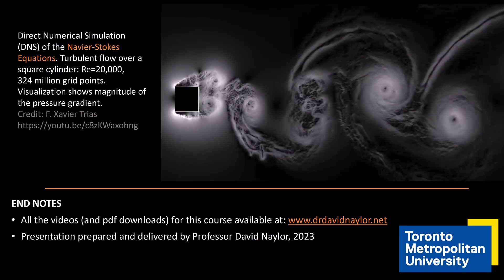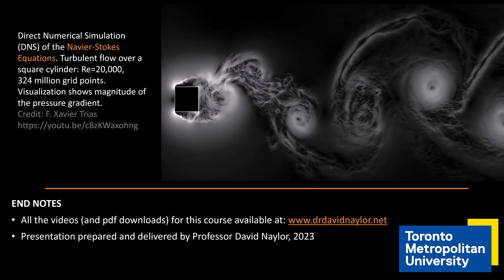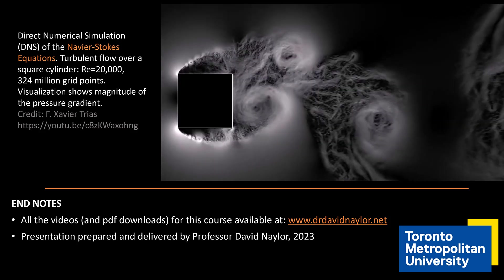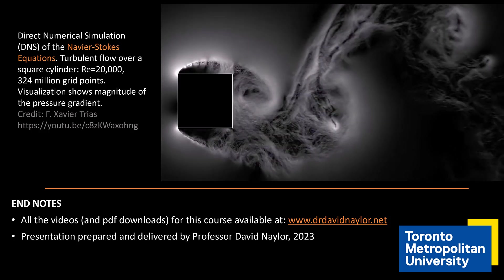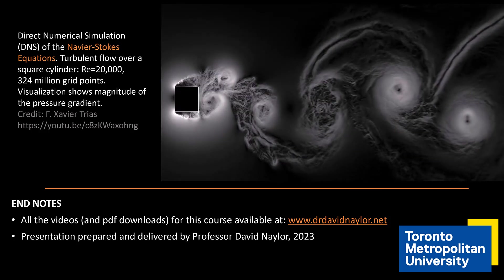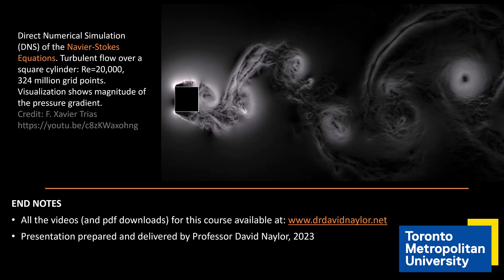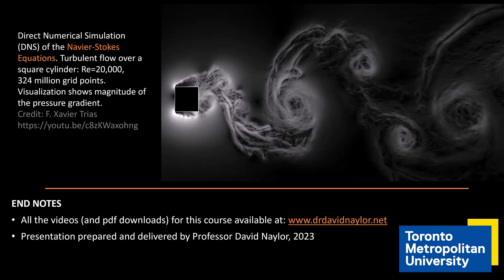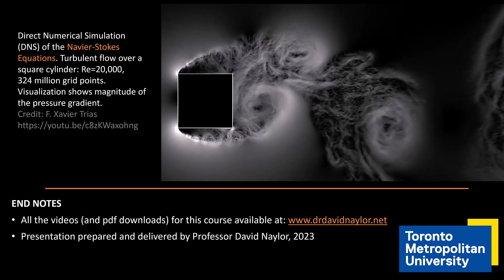As always, I like to end by showing you something interesting related to fluid dynamics. This is a CFD simulation of turbulent flow over a long square cylinder at a Reynolds number of 20,000. It's a numerical simulation of the Navier-Stokes equations using a technique called direct numerical simulation or DNS. In DNS, you solve the turbulent flow by using an incredibly fine mesh, in this case over 300 million grid points. And you use a super fine time step, a very short time step, so you pick up all the turbulent fluctuations.